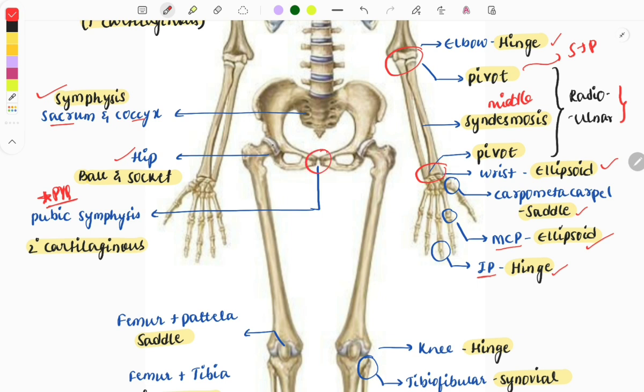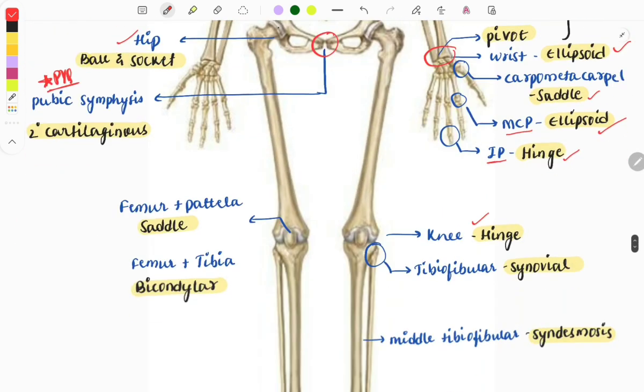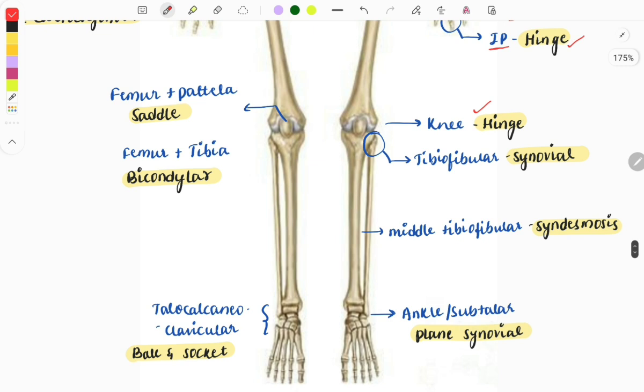Moving on, the knee joint is also a hinge joint just like the elbow.